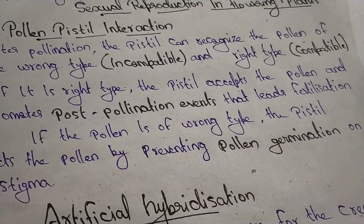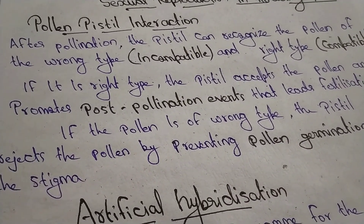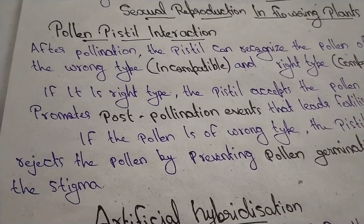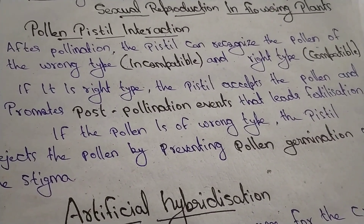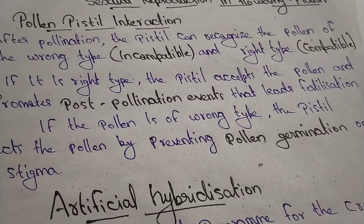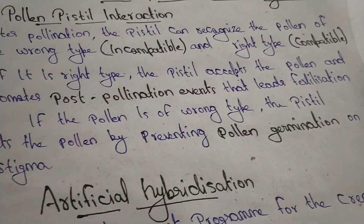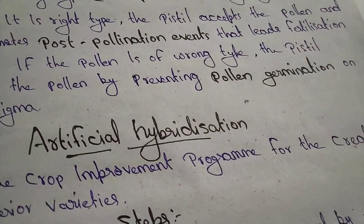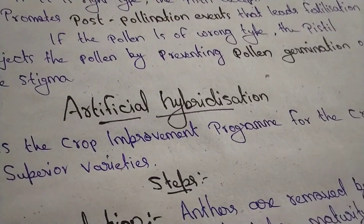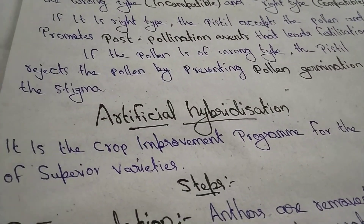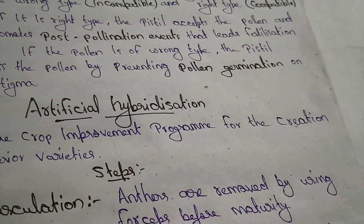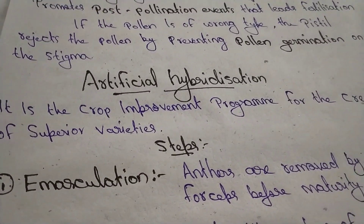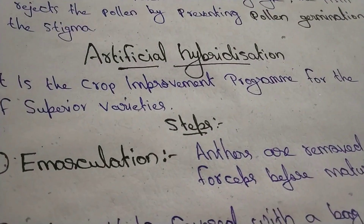One more time — Pollen-Pistil Interaction: the wrong type is incompatible, the right type is compatible. It is a crop improvement program for the creation of a superior variety.